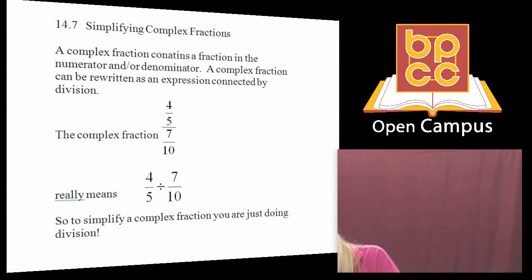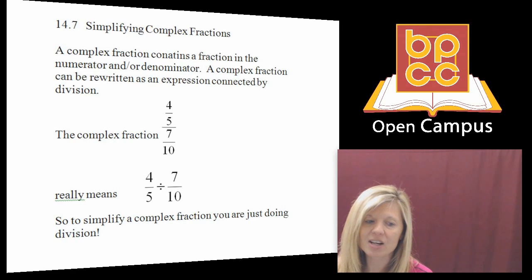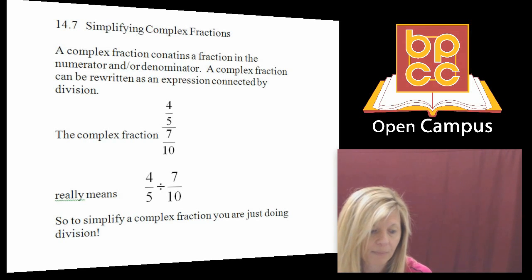If you look here, I have a complex fraction, four-fifths over seven-tenths. The reason why that's complex is because there's a fraction in the numerator and there's a fraction in the denominator, and that is unacceptable as an answer. From arithmetic, when you write a fraction, you should only have a whole number in the numerator and a whole number in the denominator. So by having four-fifths and seven-tenths, which are fractions, this is called complex.